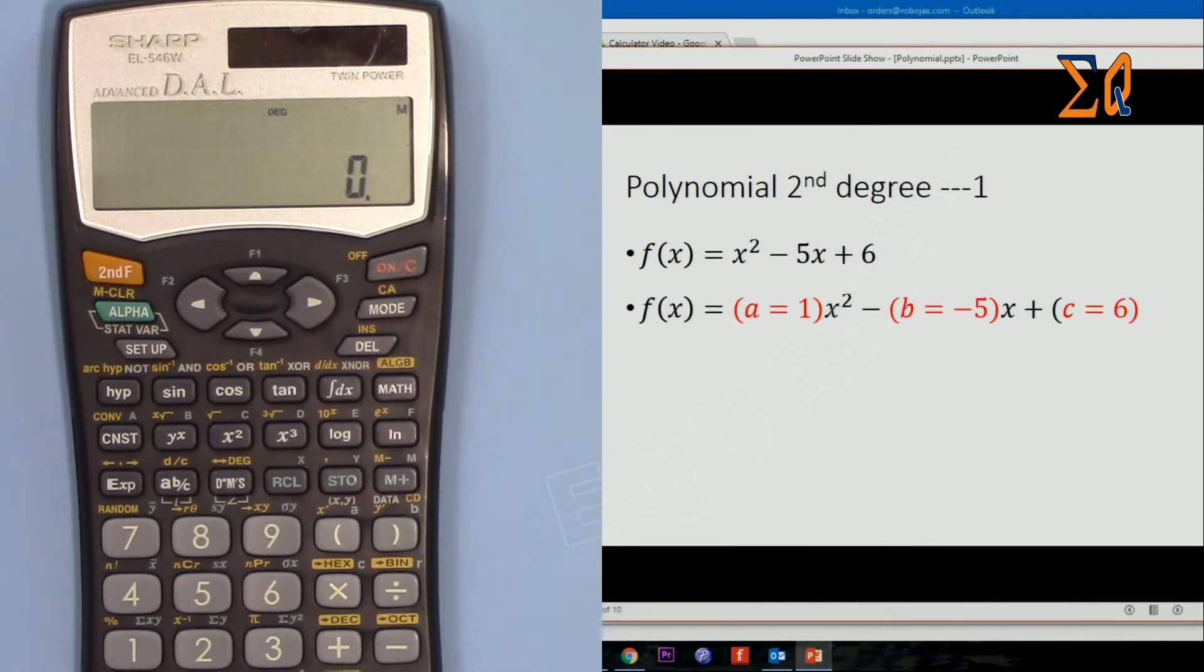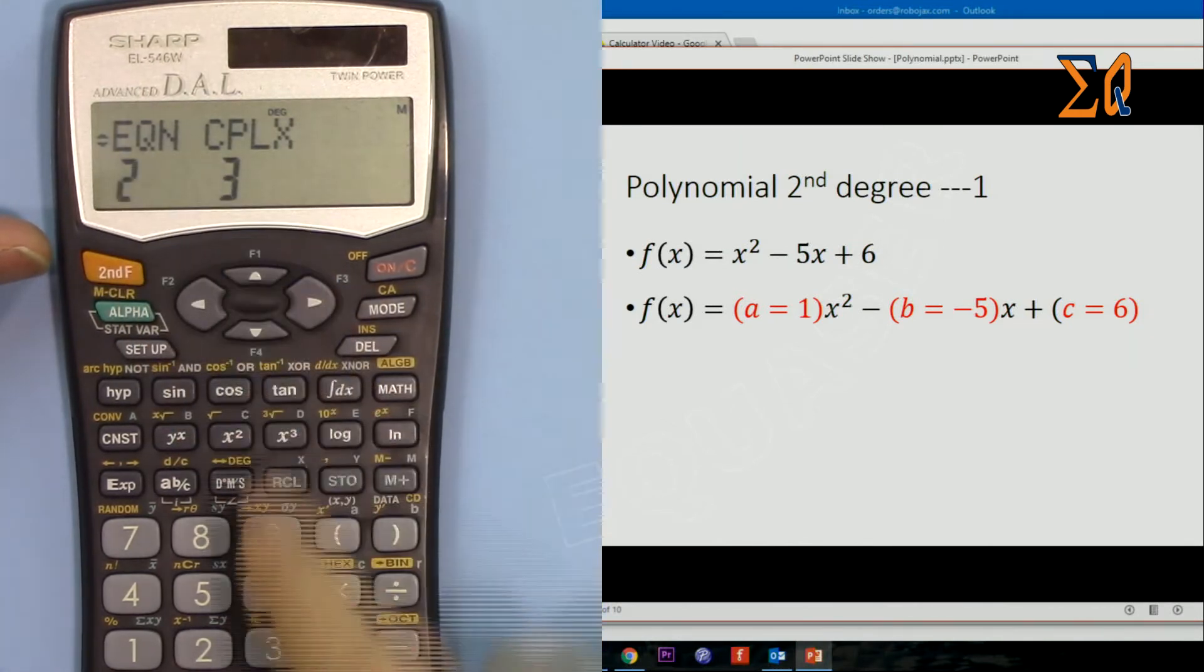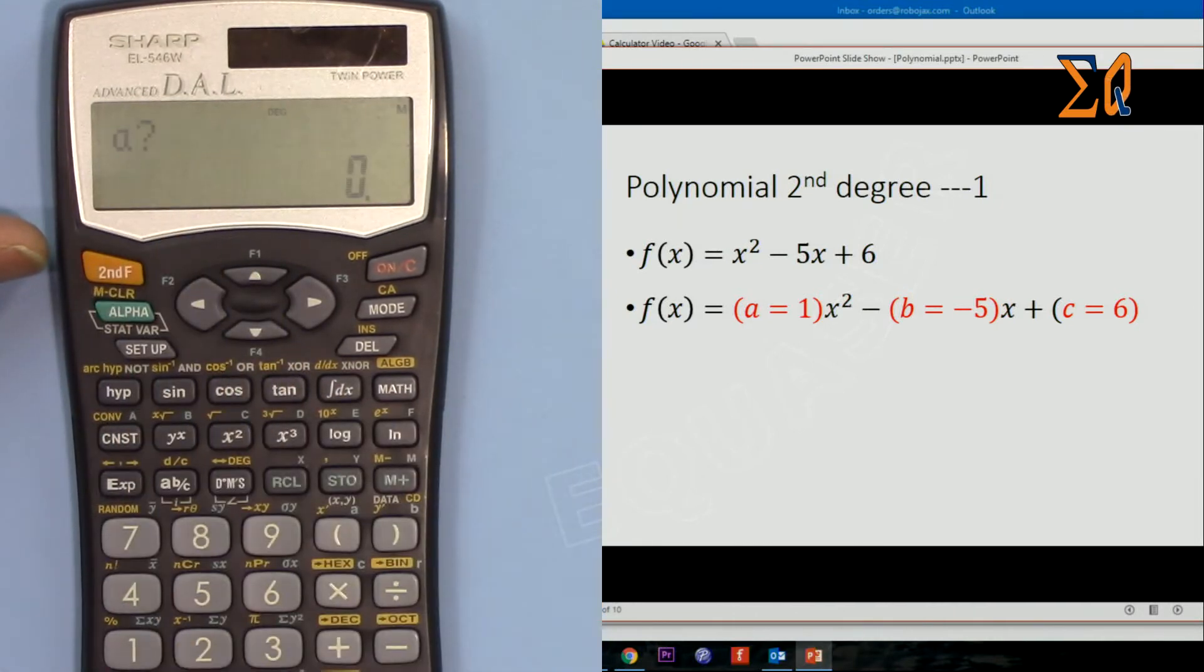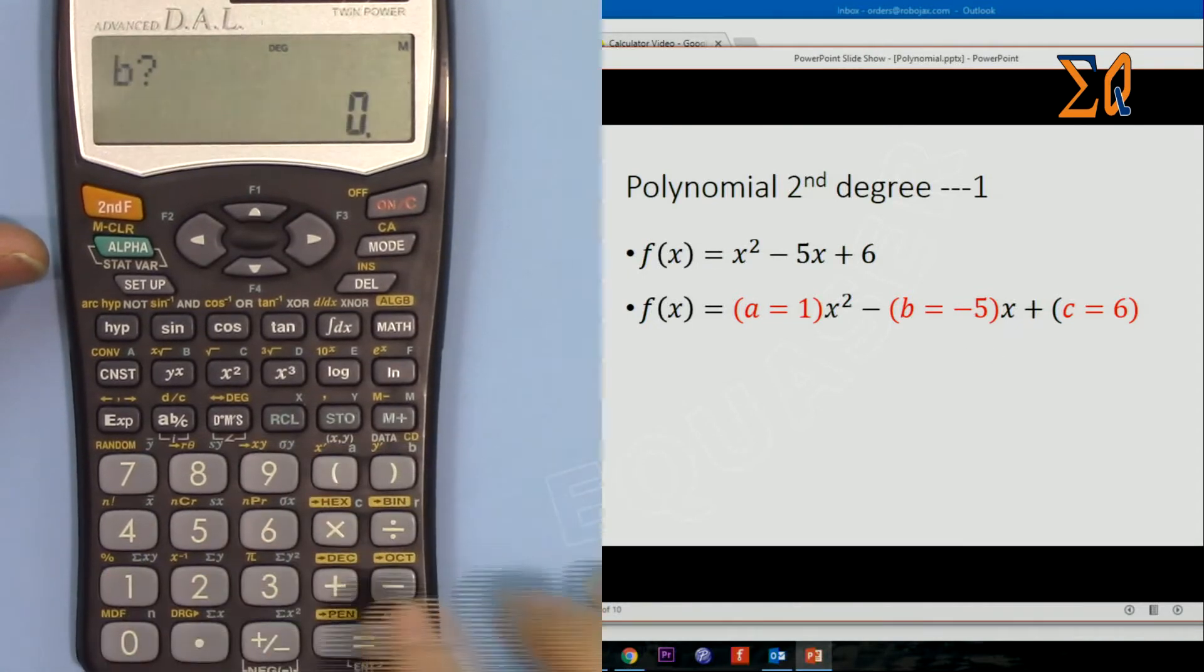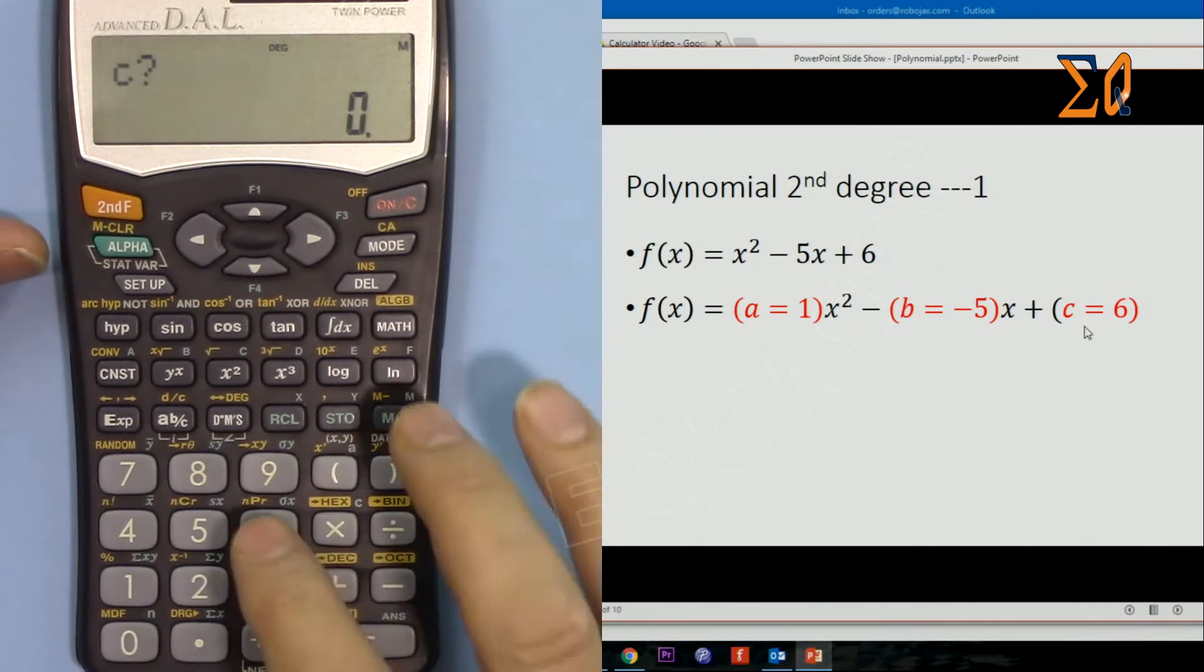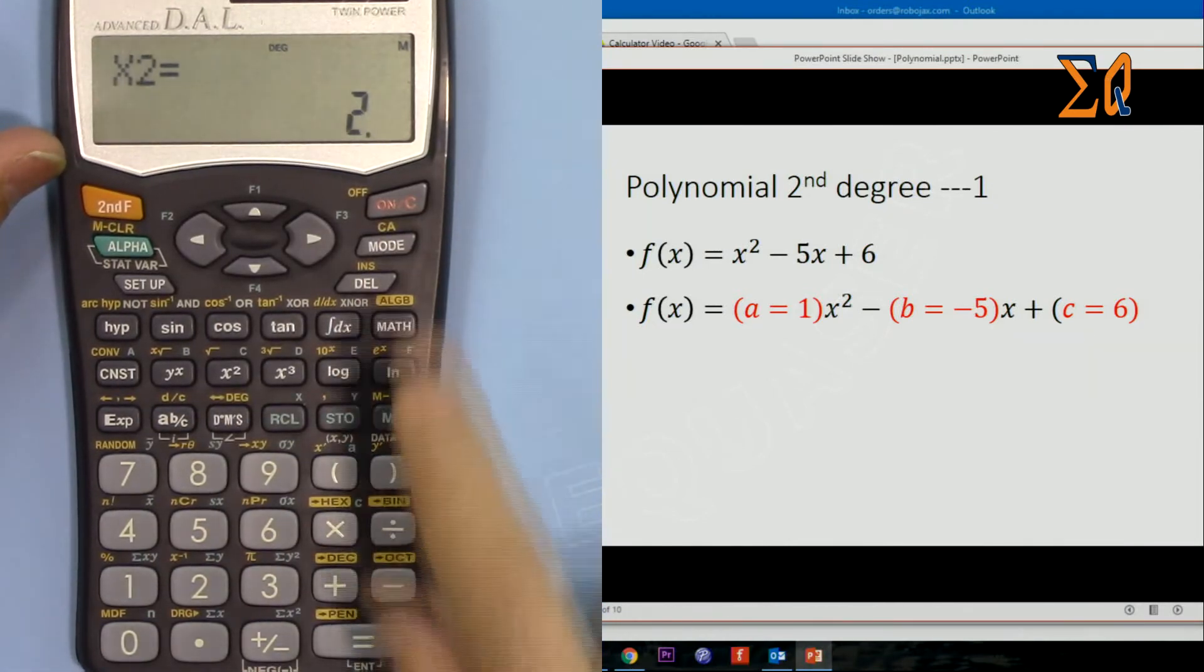We have to put it in the format of ax² + bx + c. So a is 1, b is -5, and c is 6. We will need these values. Press MODE, go down to Equation, press 2, and the arrow shows we have more. Go down to Quad, press 2. Now it asks for a, so 1, then equal sign, then -5, equal sign, and for c, 6. It gives you the answer: x1 and x2 is 2.